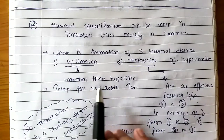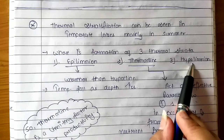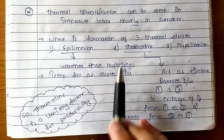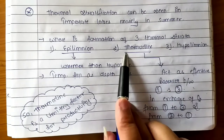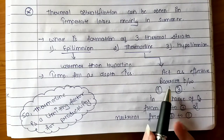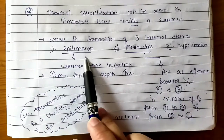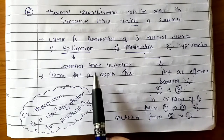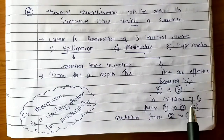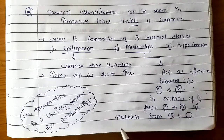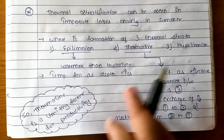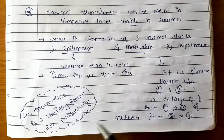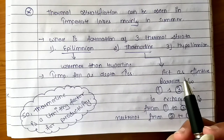The Epilimnion is the warm surface layer. As we go deeper, the temperature falls. The Thermocline lies between the Epilimnion and Hypolimnion — it acts as a very effective barrier between the two. The oxygen exchange from outside occurs in the upper layer, and nutrient exchange from lower to upper is restricted. The thermal stratification creates very different conditions in each layer.